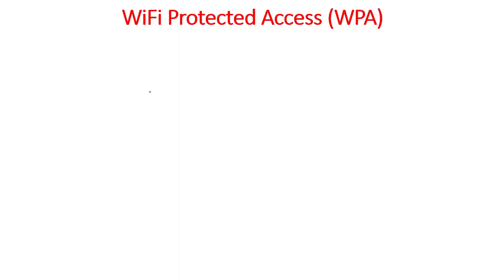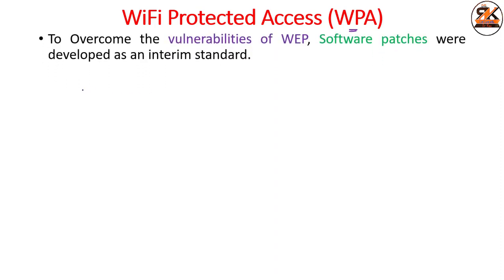In this lecture, we will study about another security standard in wireless networks, and this is Wi-Fi Protected Access, WPA. WPA is an enhancement and it was proposed to overcome the vulnerabilities of WEP. We have already studied the vulnerabilities of WEP. It came as a software patch and developed as an interim standard — a temporary standard to overcome the vulnerabilities of WEP.